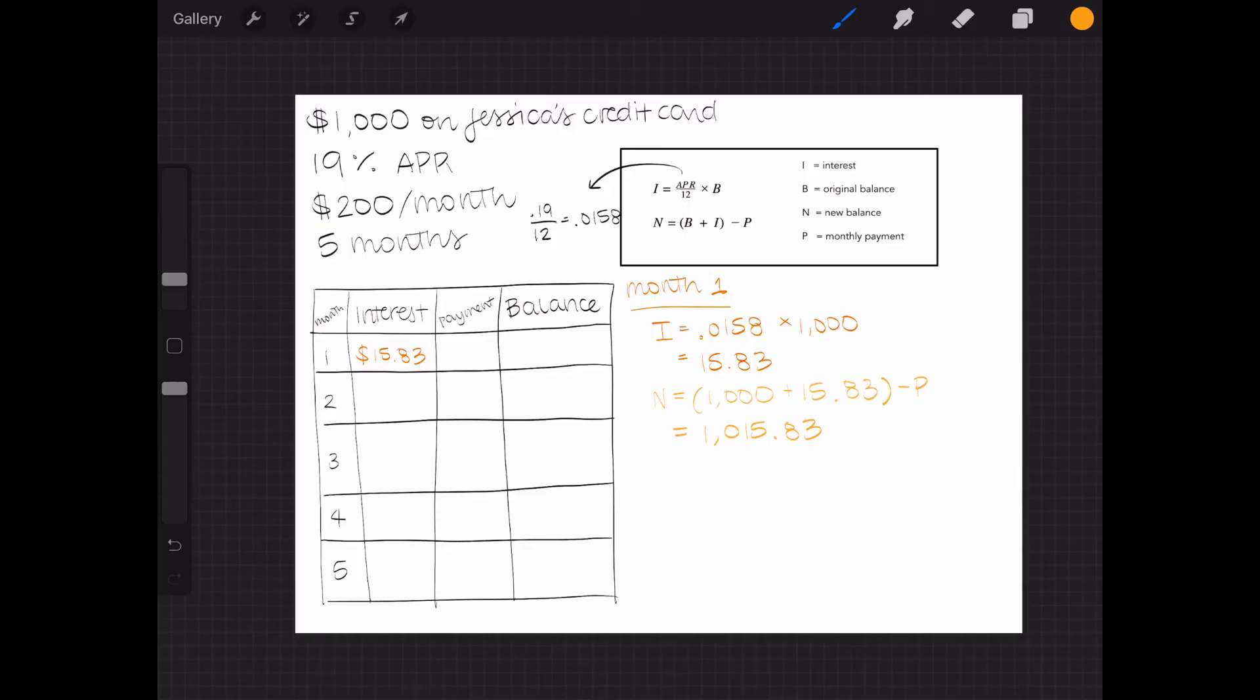So we can subtract her monthly payment of $200 from that sum. $1,015.83 minus $200 equals $815.83, which is Jessica's new balance after she makes her payment.